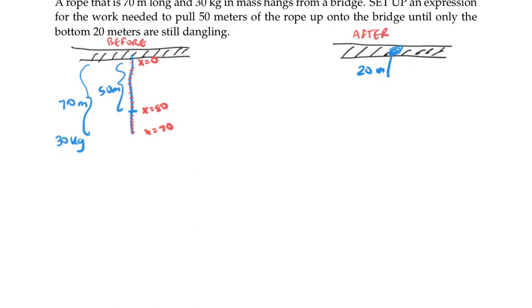The part of the rope between x equals 0 and x equals 50 is going to get pulled up and coiled, and the part of the rope between x equals 50 and x equals 70 is just being dragged along for the ride until it's dangling down.